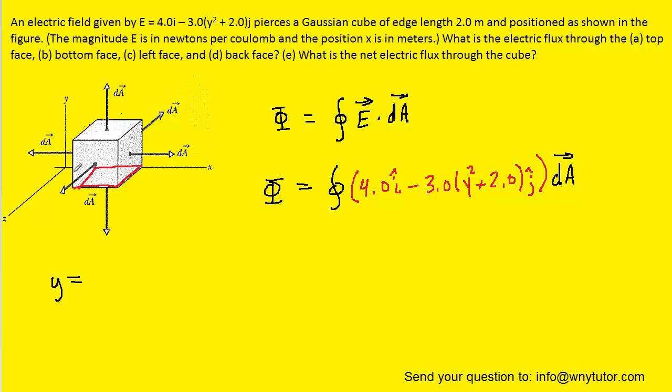Because we're determining the electric flux through the left face of the cube, we can say that dA is going to be dA multiplied by negative i-hat. It's negative because the dA vector is pointing to the left, and it's i-hat because it's pointing along the x direction. We'll make that substitution. When we distribute and multiply the negative i-hat and the i-hat, the i-hats cancel.